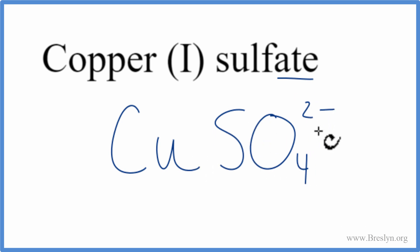So we have 2 minus for our sulfate, we look that up, and then copper, it says copper(I). That Roman numeral tells us we have a +1 ionic charge.